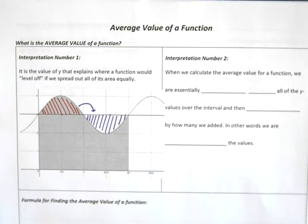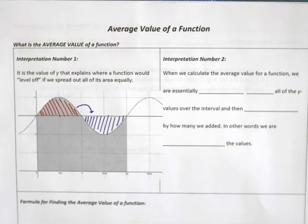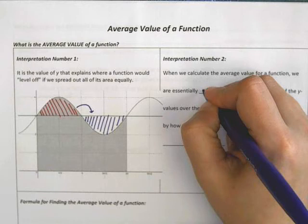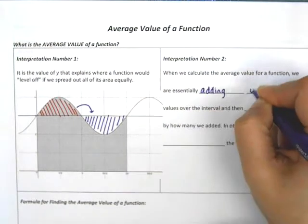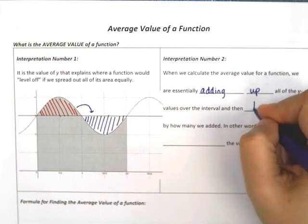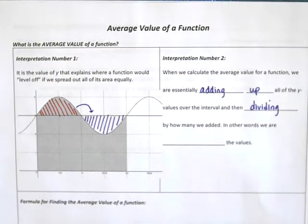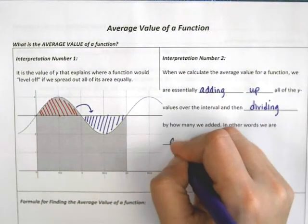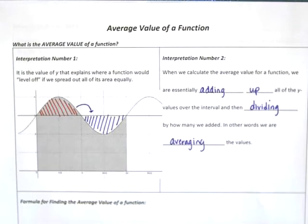A second way to think about average value, still connected to this interpretation but slightly different, is that when we calculate the average value, we are essentially adding up all of the y values over this interval and then dividing by the interval itself — how many we added. In other words, we are averaging the values.